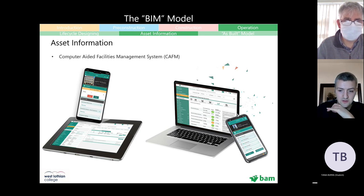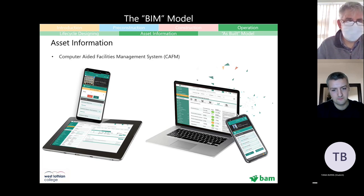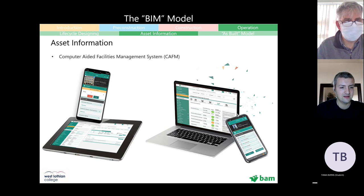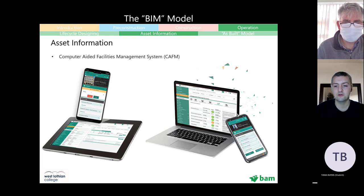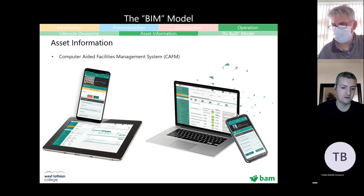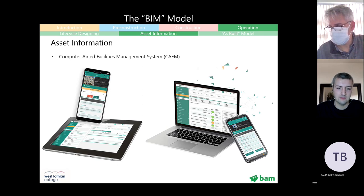A CAFM system allows site staff to do their checks digitally — all information is live and up to date. They receive notifications when an air handling unit or other asset hasn't been checked within a set period and needs attention. This is called planned preventative maintenance — essentially an alarm on all your assets — and that's considered best practice.